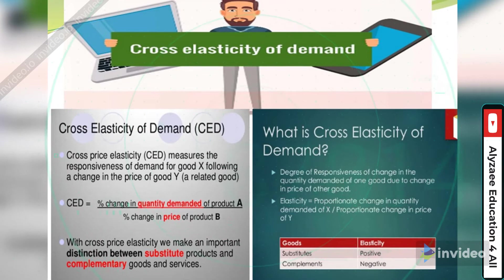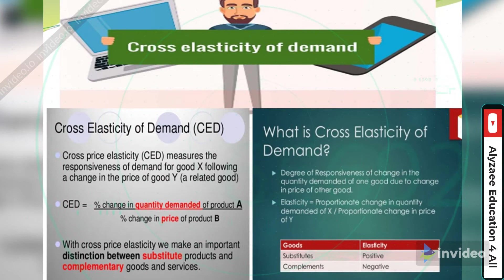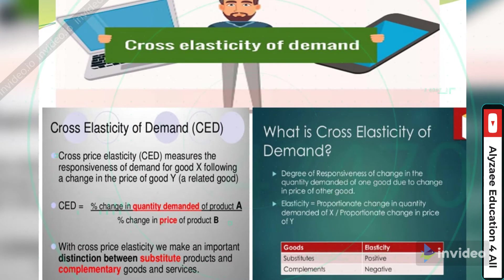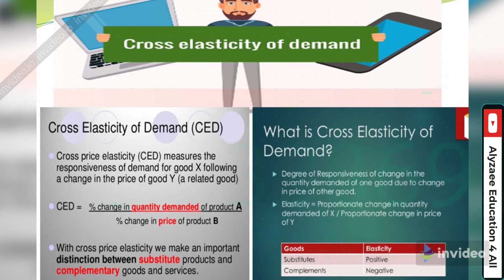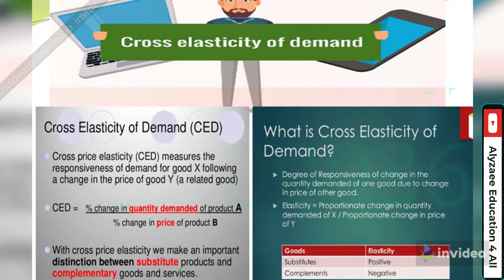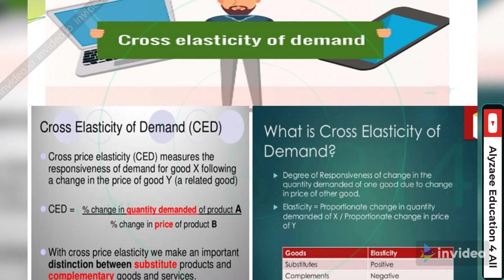What is cross elasticity of demand? The degree of responsiveness of change in the quantity of demand of one good due to the change in price of the other good. So demand change in quantity may impact the degree change in the price of the other quantity. Elasticity equals proportionate change in quantity demand of X divided by proportionate change in the price of Y. If we are saying they're substitutes, so elasticity be positive, and if we are discussing complements, so the elasticity will be negative as we have seen in the numerical calculation above.